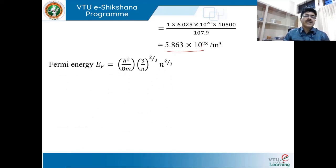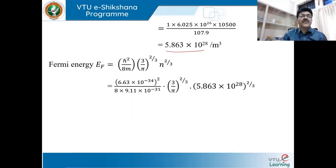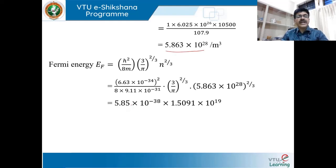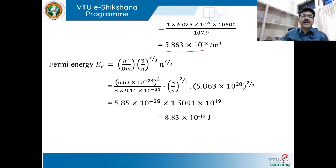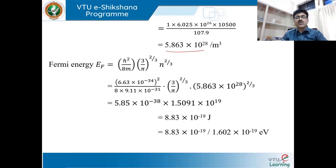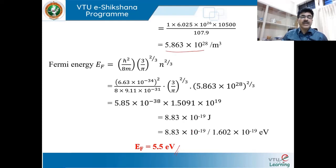To calculate Fermi energy: EF0 = h²/(8m) × (3N/π)^(2/3) = 5.85 × 10^-38 × (N^(2/3)). Substituting N^(2/3) = 1.5091 × 10^19 gives EF0 = 5.85 × 10^-38 × 1.5091 × 10^19 = 8.83 × 10^-19 joules. Converting to electron volts by dividing by 1.602 × 10^-19 gives EF0 ≈ 5.5 electron volts. This is the Fermi energy of the material at 0 Kelvin.